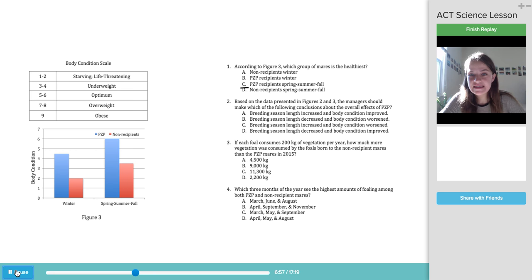Number two, based on the data presented in figures two and three, the managers should make which of the following conclusions about the overall effects of PZP? So again, this question directs us to figures two and three. So let's read through the answers. Breeding season length increased, body condition improved. Breeding season length decreased, body condition worsened. C, breeding season length increased, body condition worsened. And D, breeding season length decreased, body condition improved. So here's just a combination of two things. The breeding season length, which we know is in figure two, and body condition, which was shown in figure three. So let's look for the trends. Again, looking just at figure three because it's here. With PZP, right, we just established in question one that that condition definitely improves. So we know that we can get rid of the answers B and C for that reason, because the body condition improved and didn't worsen. So now we just need to check the breeding season length.